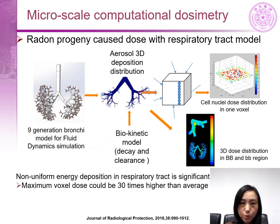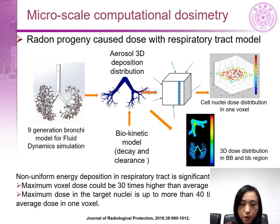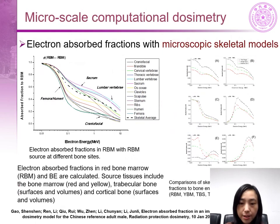These are the dose estimations for mammography with the detailed breast model, and this data will be adopted by the revised national standard. Now let's move to the microscale computational dosimetry. We studied the radon progeny dose with the respiratory tract model. Here we found a very non-uniform energy distribution in the respiratory tract. For example, the maximum voxel dose could be 30 times higher than the average dose. Another example of the microscale computational dosimetry is the study on the electron absorbed fractions with microscopic skeletal models, where we calculated the electron absorbed fractions in red bone marrow and bone.